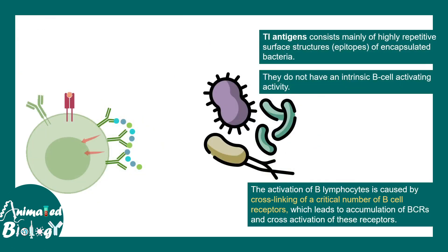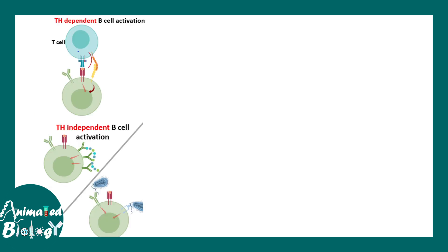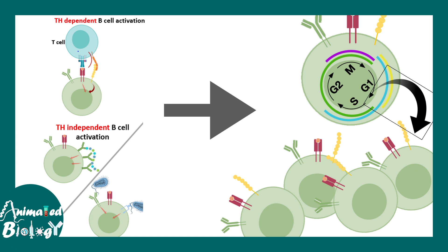There can also be cross-linked antigen that activates B cells, but that activation is not very strong — not enough to switch isotypes. Bacterial components like flagellin and LPS can activate B cells independent of the T cell. Whether T cell-dependent or T cell-independent activation, the B cell would eventually proliferate and increase in number.